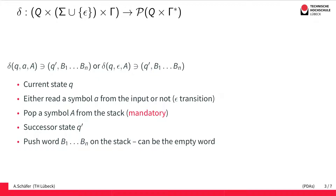At first glance this transition function might look frightening, however once you have made your way through this formal definition it's actually quite easy. The transition function takes the current state Q as its first part. The second part is something from the input: we can either take a symbol A from the input alphabet sigma, or perform an epsilon transition by not reading any input.